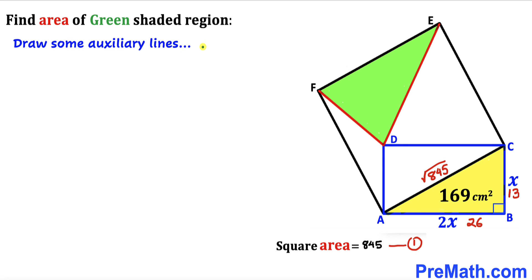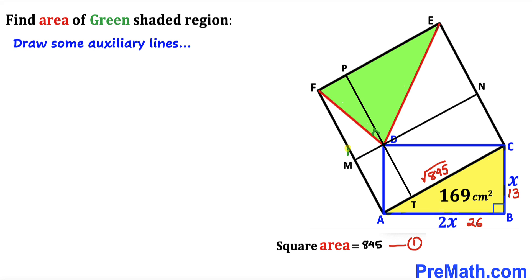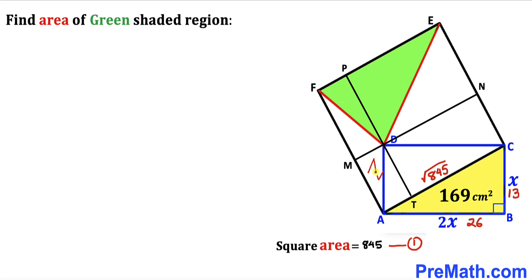Now we draw auxiliary lines to simplify the problem. We draw straight lines MN and PT passing through the common point D, such that line MN is parallel to side AC of the square, and line PT is parallel to side AF of the square. Focusing on rectangle MDTA, we see that diagonal AD divides its area into two equal parts. If the area of one triangle is lowercase a, the other identical triangle also has area a.